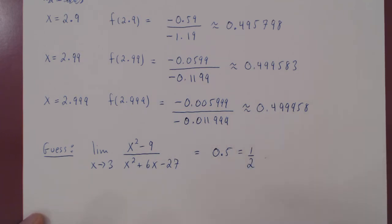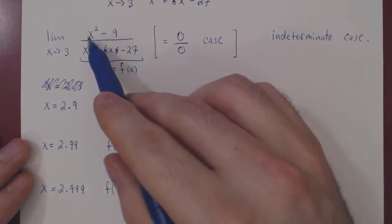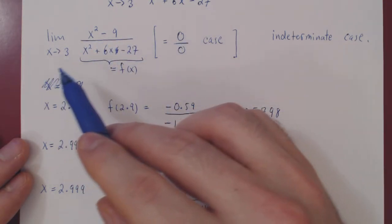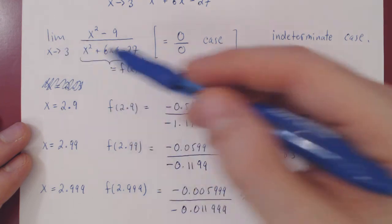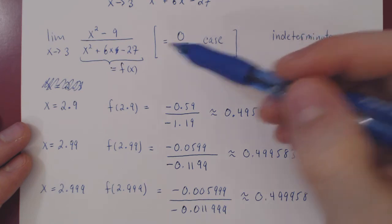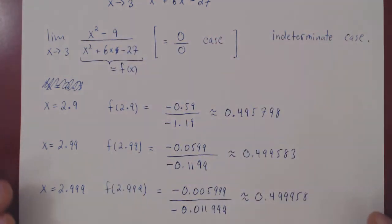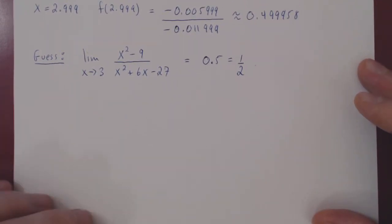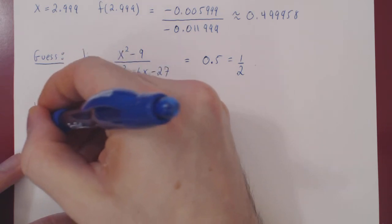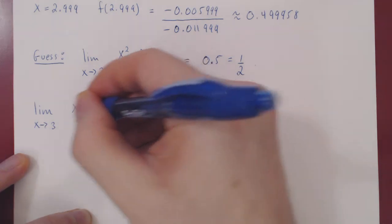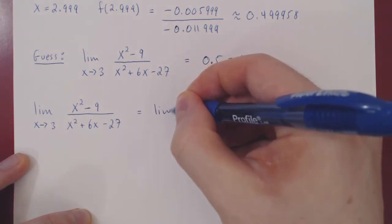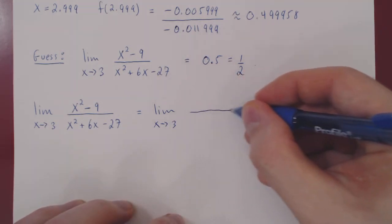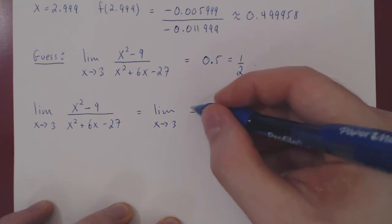How could we prove that this is actually the right answer? The idea is in factoring. Both polynomials are equal to 0 when x equals 3, so we can use the zero theorem: if a value of x makes a polynomial equal to 0, then x minus that value will be a factor of the polynomial. So we have here as a free factor x minus 3, and let's try to factor and see if this is helpful.